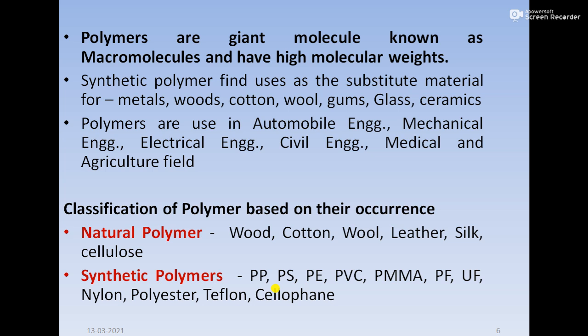There is a classification based on occurrence. One is natural, which is naturally occurring — wood, cotton, wool, leather, silk, cellulose — those are natural polymers. Synthetic polymers are prepared by human beings, that is manmade: polypropylene, polystyrene, polyethylene, polyvinyl chloride, polymethyl methacrylate, phenol formaldehyde resin, urea formaldehyde resin, nylon, polyester, teflon, and cellophane. Those are some examples of synthetic polymers.